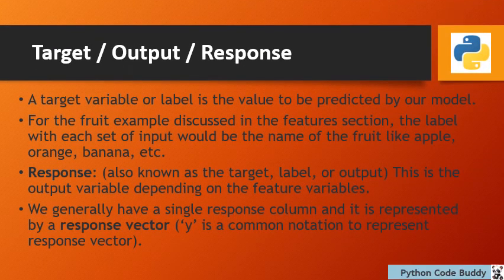Now a bit more on the target or response output. A target variable or label is the value to be predicted by our model. For the fruit example discussed in the feature section, the label with each set of inputs would be the name of the fruit — like apple, orange, banana, etc.